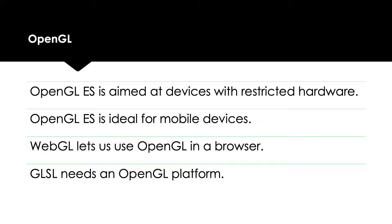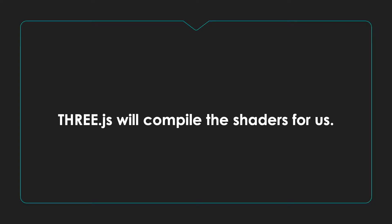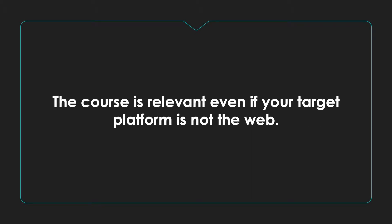The course is mainly about GLSL, but in order to use GLSL we need an OpenGL platform. We're not going to spend much time considering how to compile your shaders — this is all taken care of by the 3GS library. This allows us to focus on the GLSL code itself. If you want to learn GLSL but your platform is not a browser, the course is still relevant because the GLSL syntax is common to each platform.